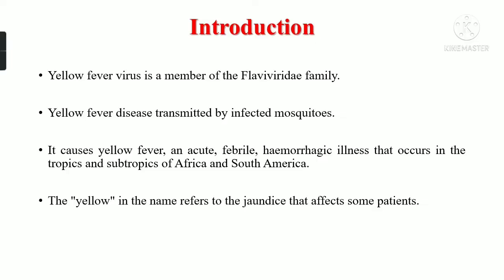Starting with introduction, yellow fever virus is a member of the Flaviviridae family. Yellow fever disease is transmitted by infected mosquitoes, especially Aedes aegypti. It causes yellow fever, which is an acute febrile hemorrhagic illness that occurs in the tropics and subtropics of Africa and South America. The yellow in the name refers to the jaundice which affects some patients, in which the body, eyes, and nails turn yellow — therefore the name yellow fever virus was given.